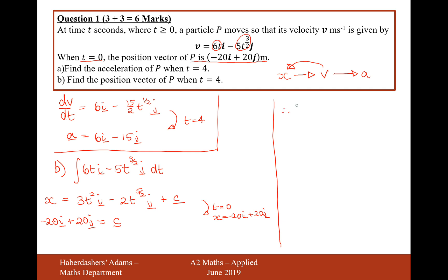So therefore the final expression is going to be x equals 3t squared. Now I'll group my i's together. I've got this amount of i's here and this amount of i's here. So it's 3t squared minus 20 on the i component and then minus 2t to the power of 5 over 2 plus 20 on the j component.